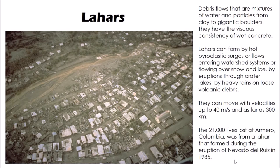One of the most tragic examples of where lahars have had a devastating impact is the town of Armero in Colombia, when the volcano Nevado del Ruiz erupted in 1985. 21,000 people in this town lost their lives because they were caught unexpectedly by a lahar coming down the side of that volcano and flowing through the town.